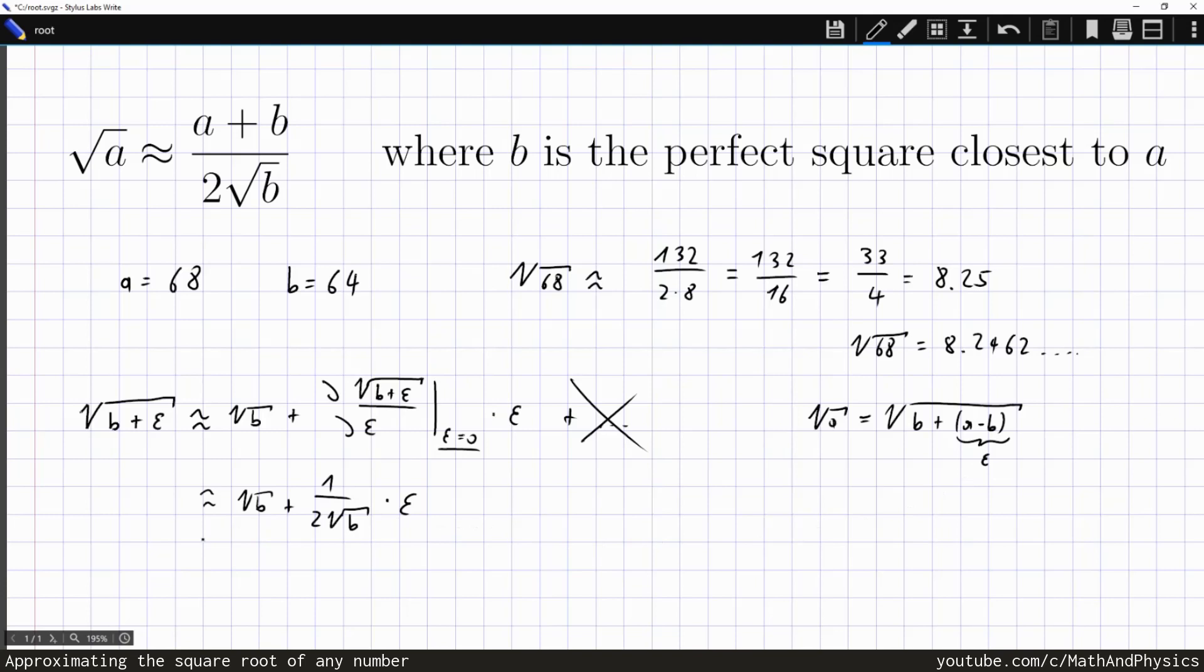But we can now start to insert this into this formula. So this is square root of b plus epsilon is a minus b over 2 square root of b. And then we write the square root of b as 2b over 2 square root of b. And then we can extend the fraction and include the numerator of the second term, which is plus a minus b. And now this is nothing but a plus b over 2 square root of b. And that's exactly our approximate result for the square root of a.